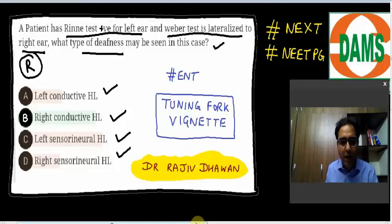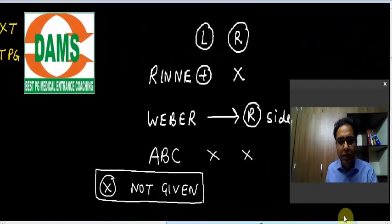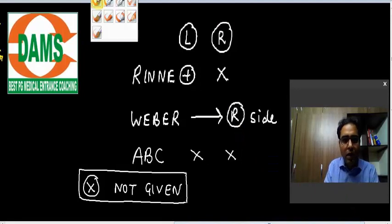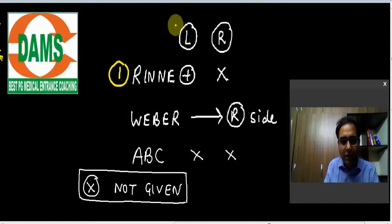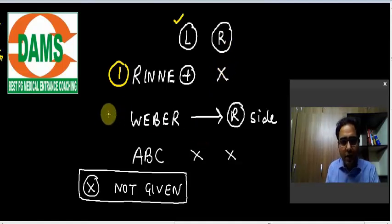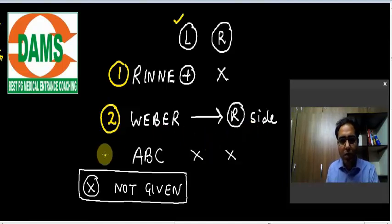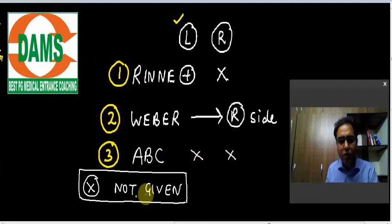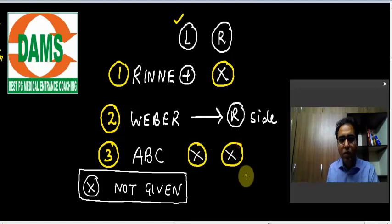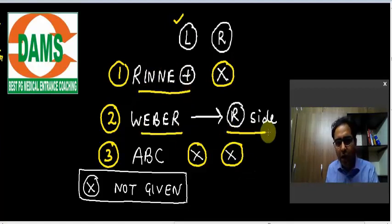First of all, let us assimilate what we have been provided as the clinical information by the examiner. The examiner is saying Rinne is positive on the left side; right side — no information has been given. Secondly, Weber is lateralized to the right side. The third test, absolute bone conduction (ABC), is not given. So we have basically two pieces of information: Rinne is positive on the left side and Weber is heard on the right side.